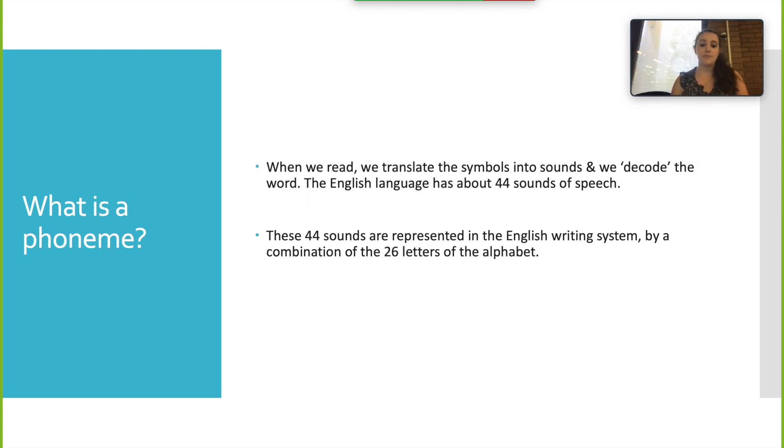So what is a phoneme? A phoneme describes the smallest possible unit of speech or sound within a word. The word comes from the Greek word phonema which means sound. When we read we translate the symbols into sound and we decode the word. The English language has about 44 sounds of speech. These 44 sounds are represented in the English writing system by the combination of 26 letters of the alphabet.